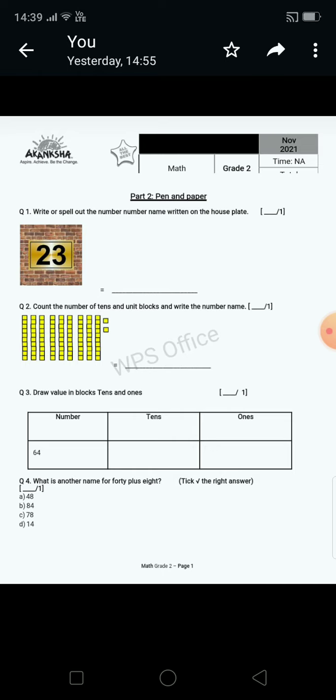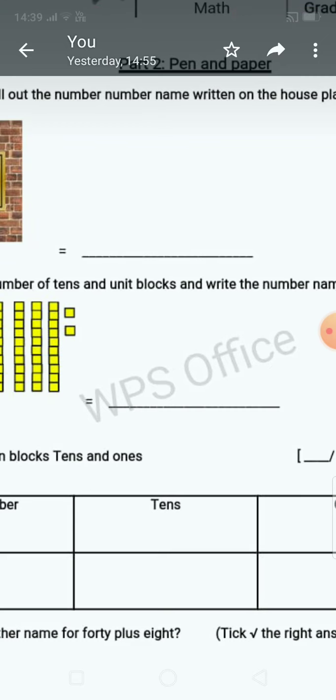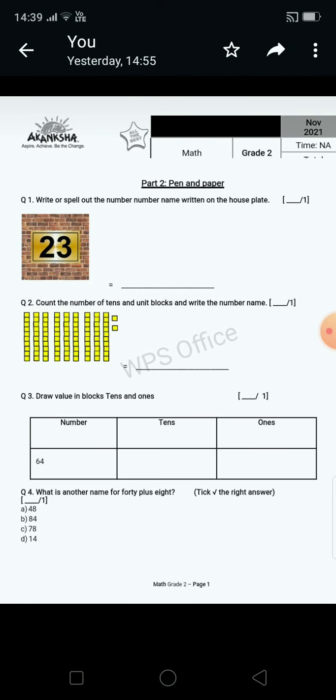Write or spell. Question number one: Write or spell out the number names written on the house plate. So you have to write the number name over here. Next one is count the number of tens and units blocks and write the number name. Here also number name, here also number name.